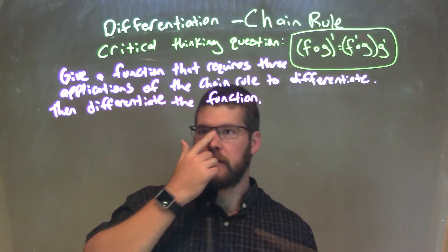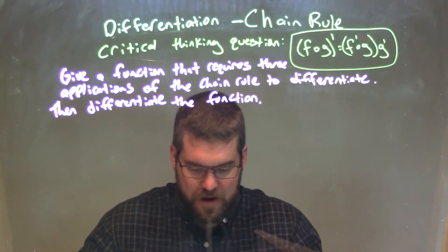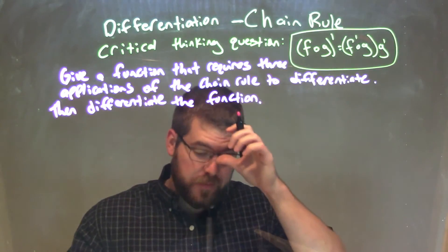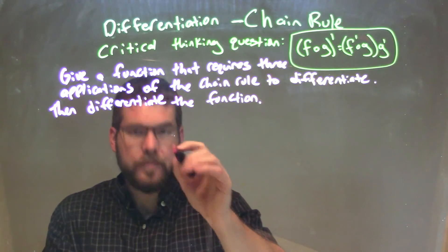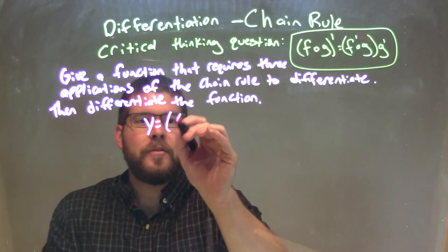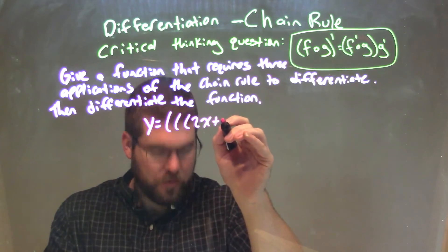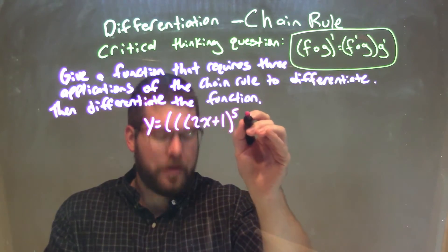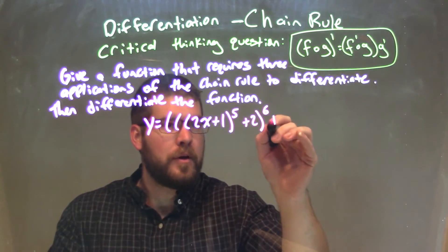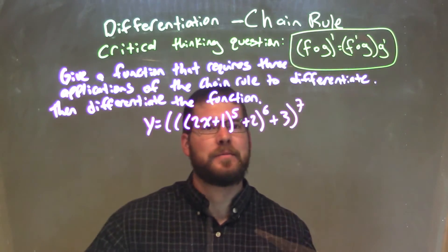We're going to differentiate this function. There are many answers that can exist, so I'm going to pick one here — it's semi-difficult but not too shabby. Let's go with y equals, triple parentheses, (2x + 1) to the fifth power, plus two, to the sixth power, plus three, to the seventh power. We're not going to do much simplification — we're just going to do chain rule three times in a row.